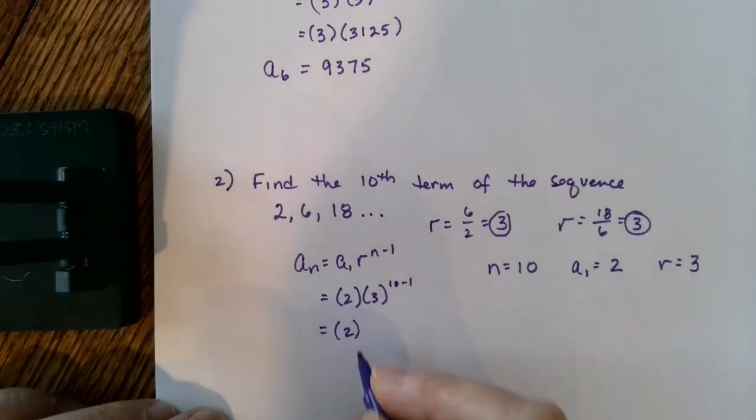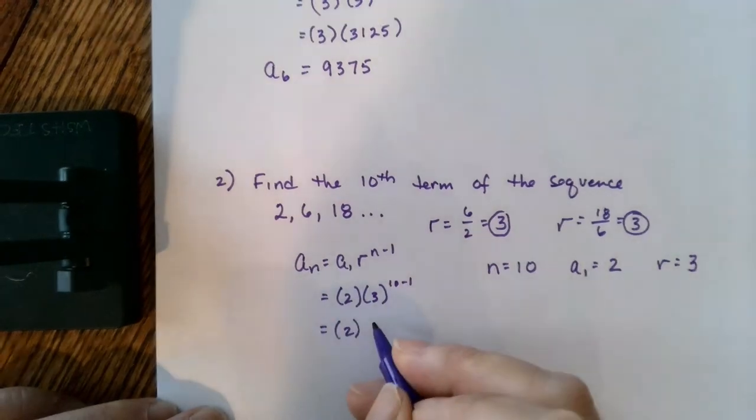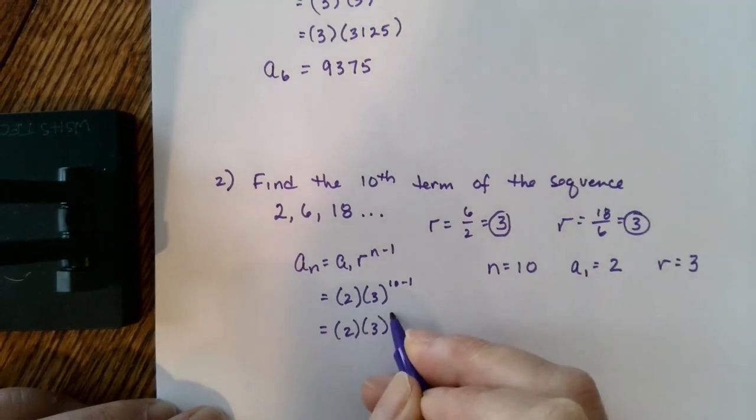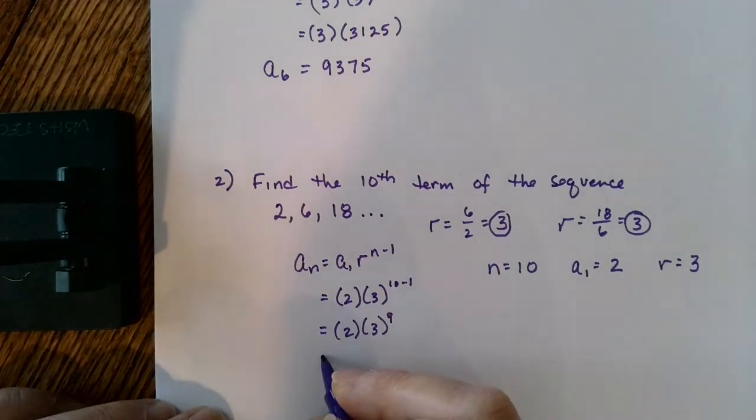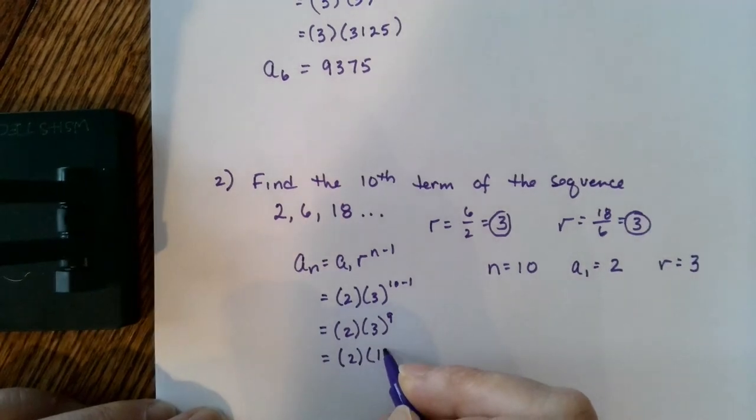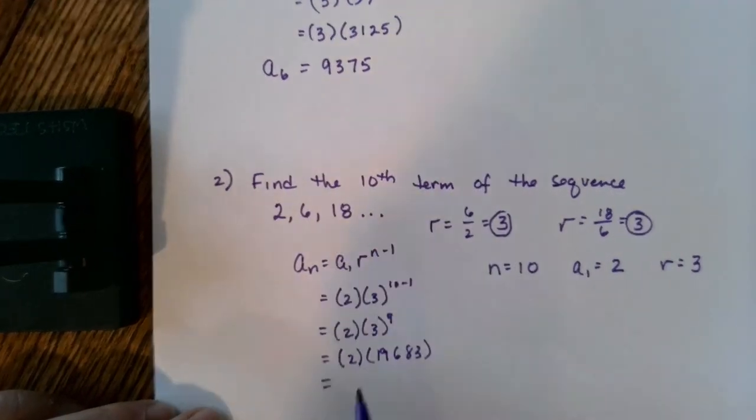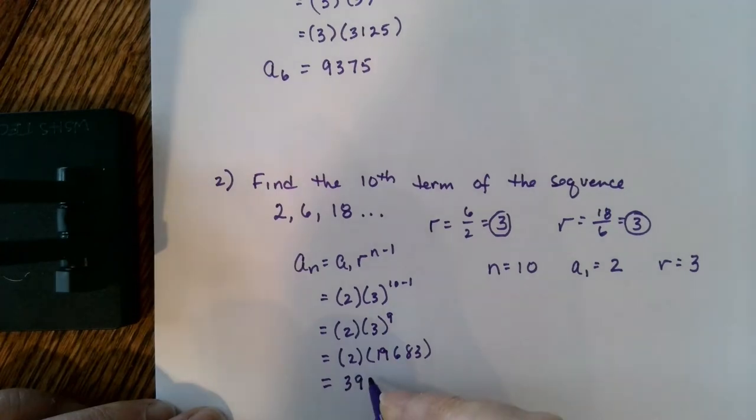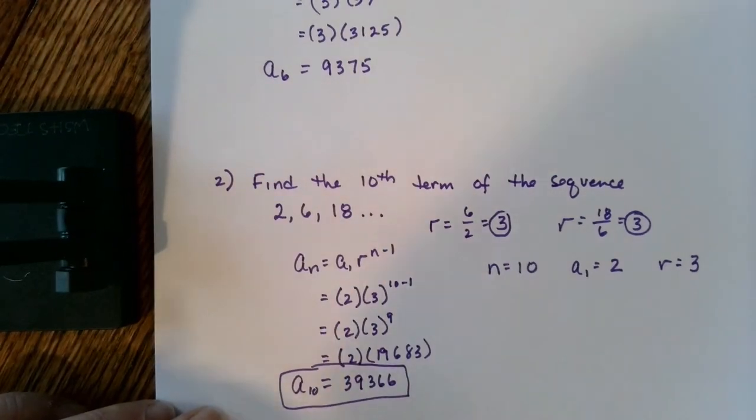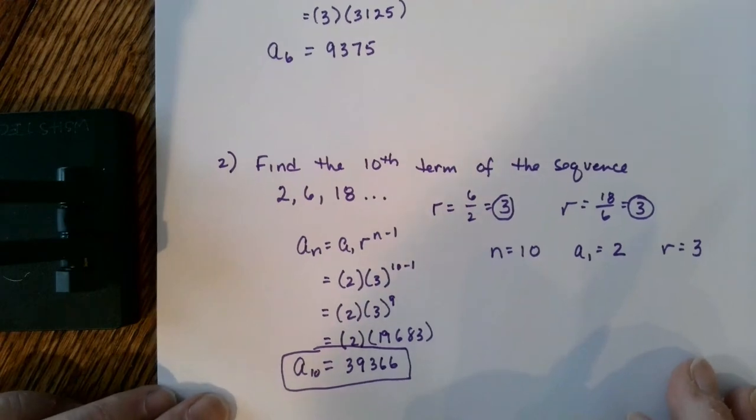Again, I cannot multiply the 2 and the 3 together. That's a common mistake. 10 minus 1 is 9. 3 to the 9th power, I recommend you using a calculator or your cell phone, is going to give you 19,683. Now multiply 2 times that and we end up with 39,366. So the value of the 10th term of the sequence is 39,366.